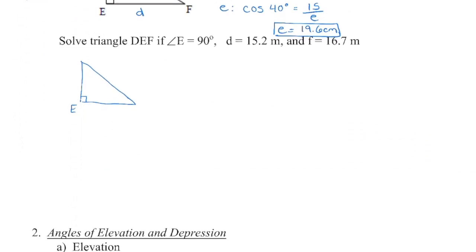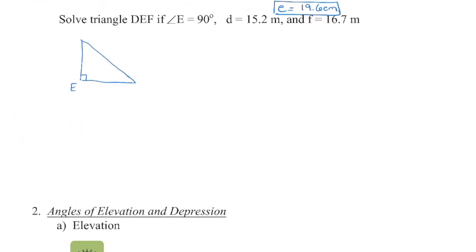The second example does not have a diagram, but it says solve, so I'm looking for my missing angles and side lengths. I'm going to start by putting in the information that we know. We know that angle E is 90 degrees, so that's my right angle. That also tells me that the side opposite from it is lowercase e. We have two more sides, D and F, that we're given.